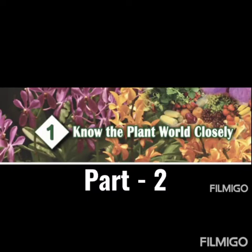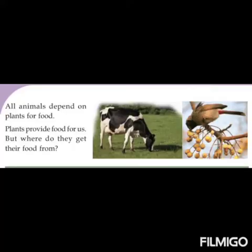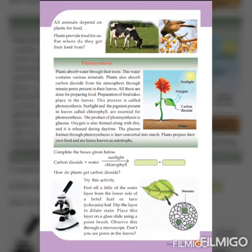Hello students, today we are going to see the second part of Class 5 Basic Science. In the last part we have already learned about the edible parts of plants. Plants provide food for us. Like us, animals also depend on plants for their food. Now, think: from where do these plants get their food? We are going to see how plants prepare their food.